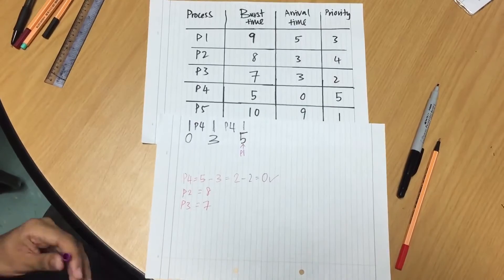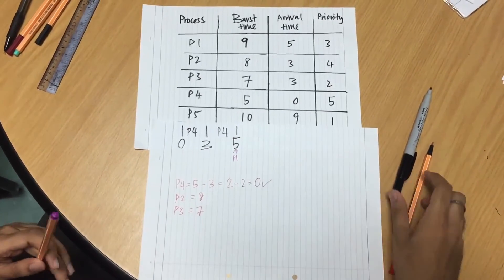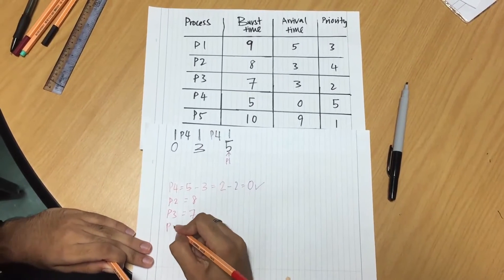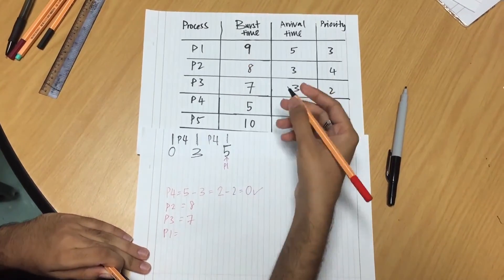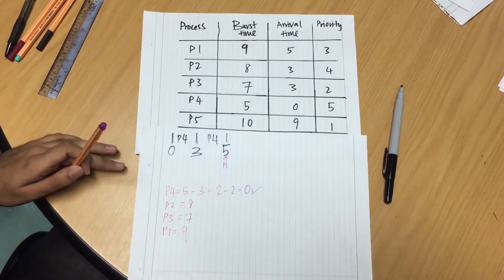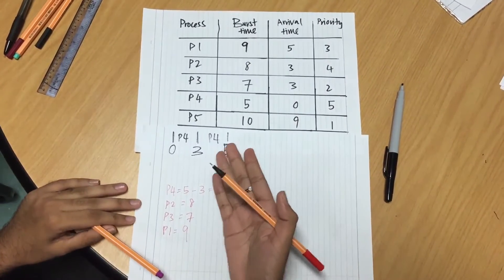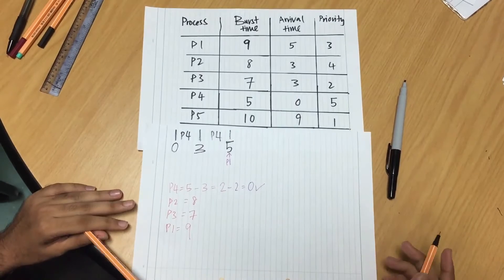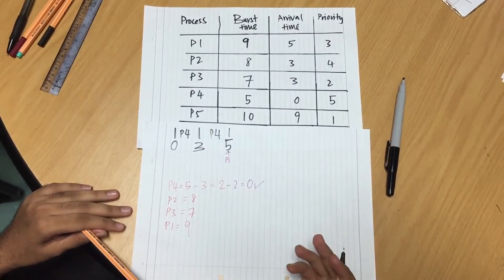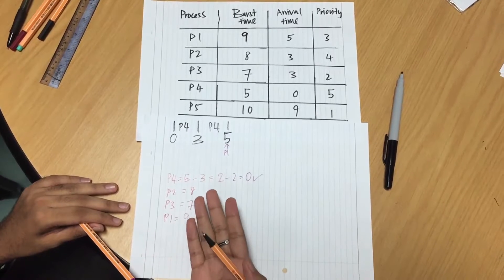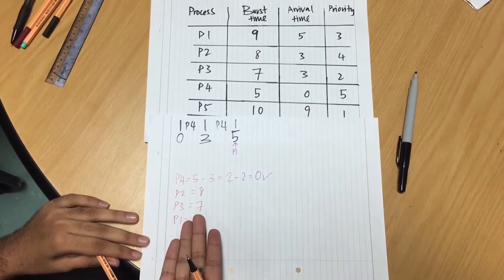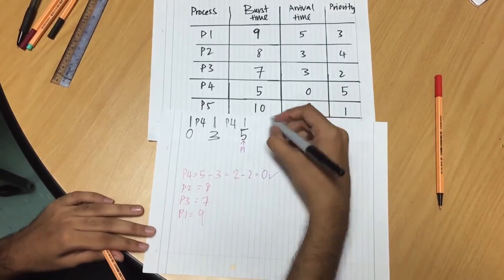We have to always write down the process which has been entered and its burst time, which is 9. Now we have to find which process will continue its execution. We have to see the shortest burst time. From this, we can see that P3 has the shortest burst time, so P3 will be executed.